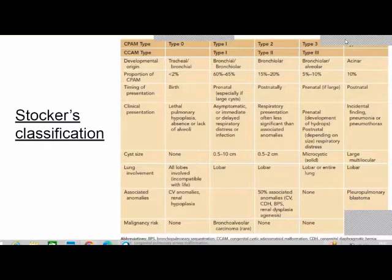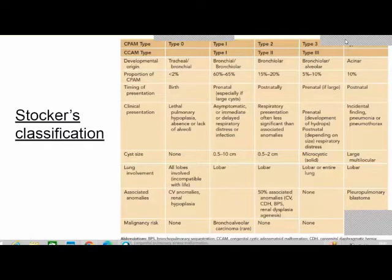Type 3 are solid lesions with bronchial or alveolar developmental origin, accounting for 5 to 10%. They can cause hydrops prenatally and present with respiratory distress postnatally. Cysts are microcystic, less than 0.5 centimeters, and can involve the entire lung or a lobe. Type 4 are acinar type, accounting for about 10%, located peripherally. They can present incidentally or as pneumothorax. Even if large — up to 10 centimeters — they are thin-walled like a bleb. Type 4 is associated with pleuropulmonary blastoma.